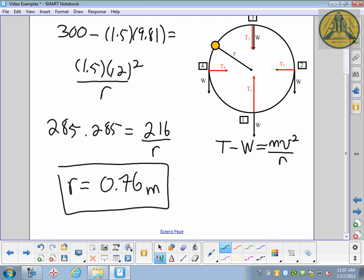So if the string is longer than 0.76, it won't break. The tension won't reach 300, given the speed of 12 meters per second. If the string is less than that length, by the time you get to 12 meters per second, the tension will reach 300 and it'll break. But at this exact point, it's kind of that equilibrium position where maybe it will or won't break. It's hard to really tell.